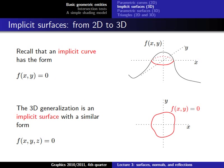We now know how to represent objects with implicit and parametric equations, but so far only curves in 2D. In graphics we're mostly interested in 3D objects, so we want to move from 2D curves to 3D surfaces. Let's start with implicit surfaces - the 3D generalization is straightforward: just add a third parameter z to the function.